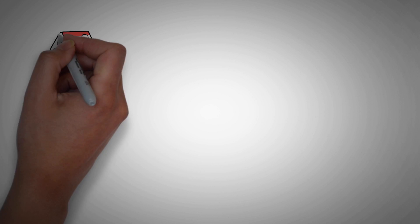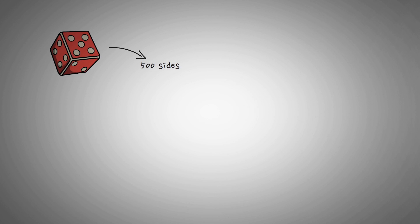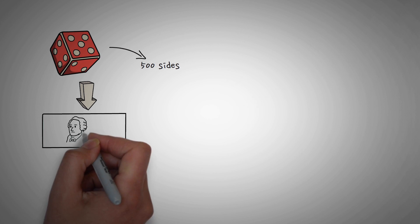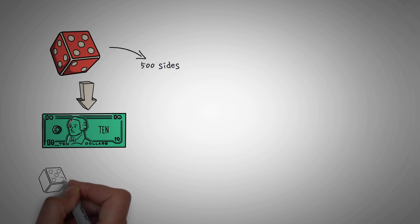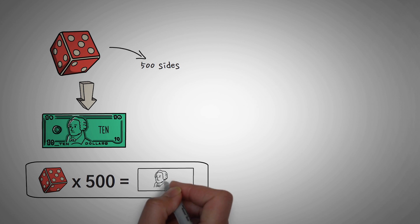Now imagine there is a mega magical dice, and it has 500 sides, but it also pays you $10 every time you hit the magical side. You would still have to roll it roughly 500 times to hit the $10 reward.